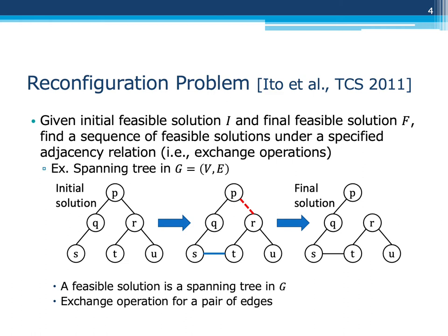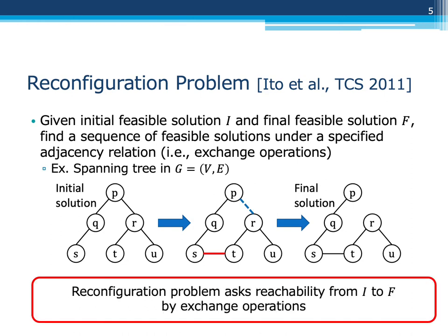For an initial spanning tree shown in the figure, we can transform it to a final spanning tree by adding this blue edge and deleting this red edge. Thus, a reconfiguration problem asks reachability from i to f by exchange operations.